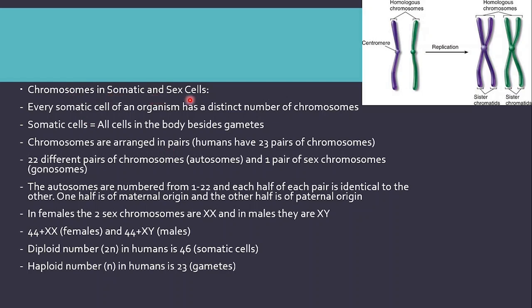Chromosomes in somatic and sex cells: every somatic cell of an organism has a distinct number of chromosomes. In humans, the distinct number of chromosomes is 46. Somatic cells are all of the cells in the body besides the gametes, because the gametes are haploid — they occur in the sex organs when gametogenesis takes place and they are a result of meiosis. Chromosomes are arranged in pairs; humans have 23 pairs, so 46 chromosomes.